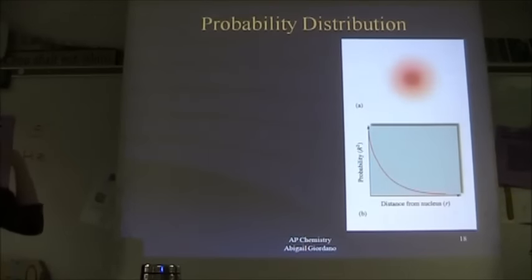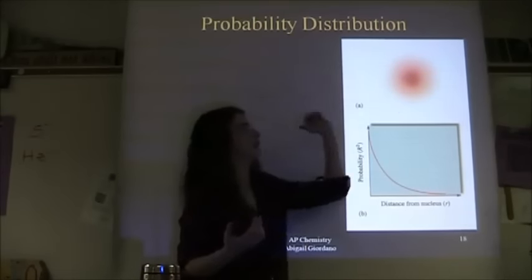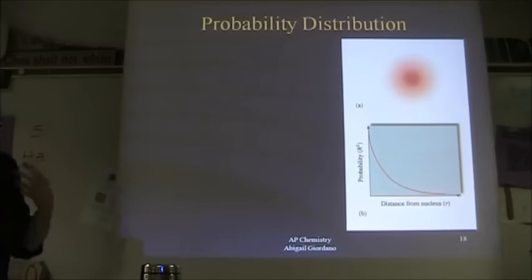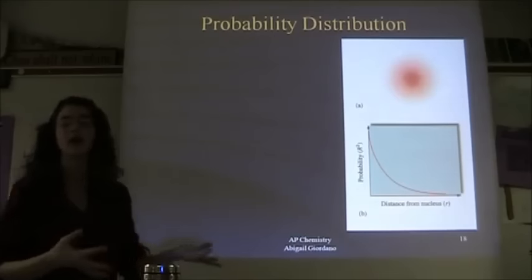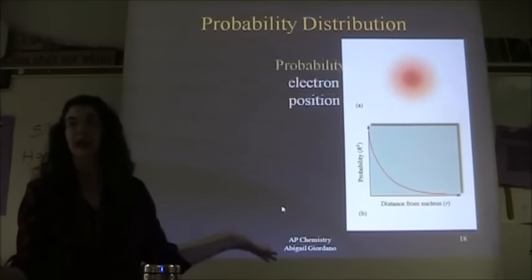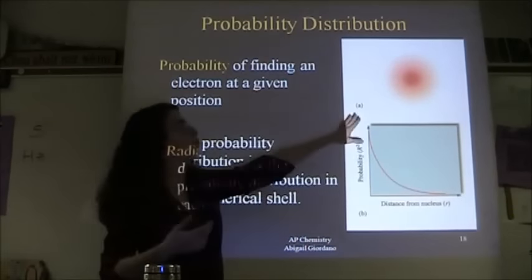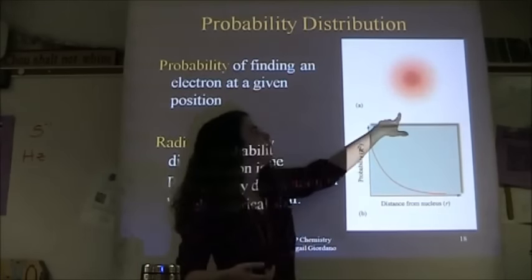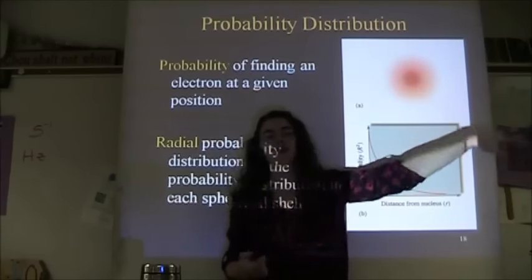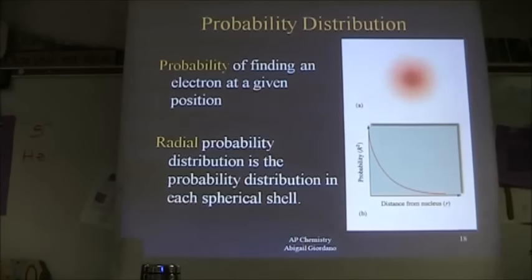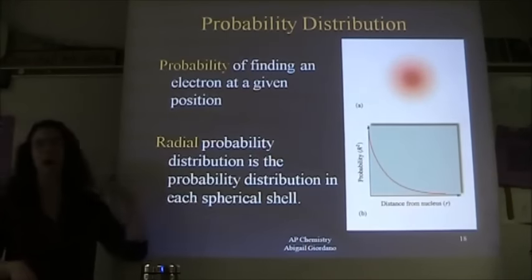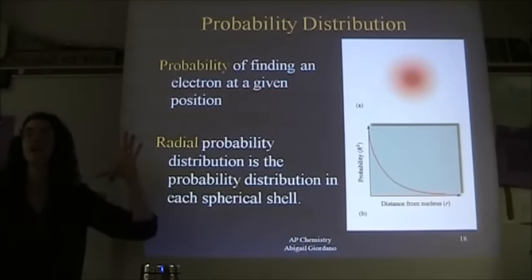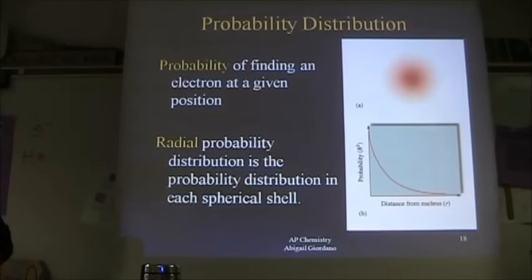This is today's model of the atom — the quantum mechanical model, also called the electron cloud model. It looks like a cloud because we don't really know exactly where the electrons are. It's a probability cloud: the closer to the center you get, the greater the probability of finding an electron. This is called radial probability — the further away from the center, the lower your probability of finding an electron.